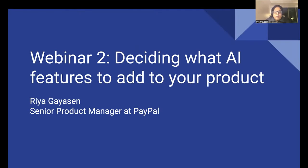Hi, everyone. Welcome to this webinar, which is part two of the two-part webinar series for AI in product. My first webinar was all about how to use AI to build a product roadmap. And this webinar is going to be all about how to think of adding AI features to your product, or how to actually build AI products.